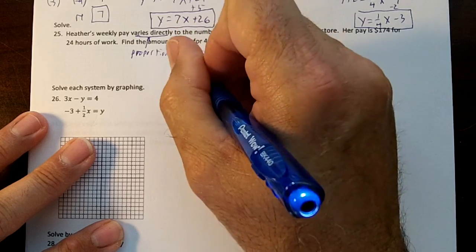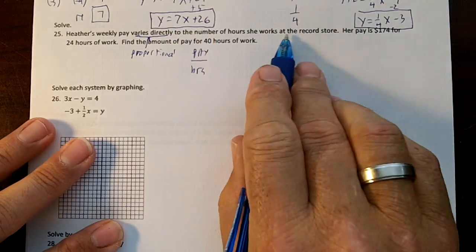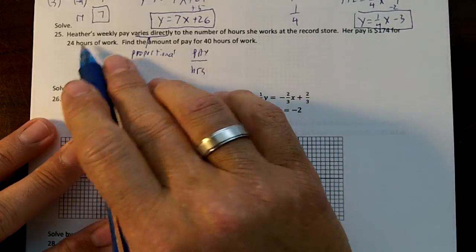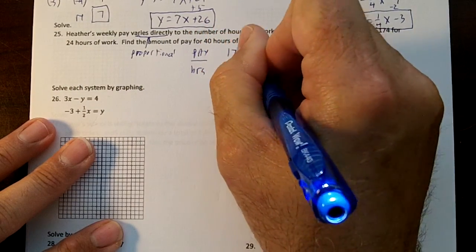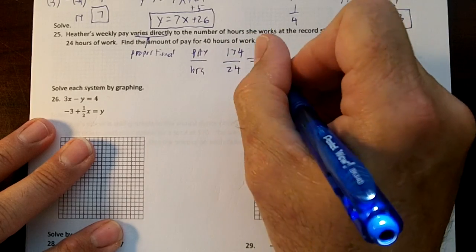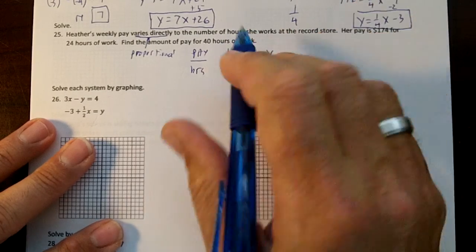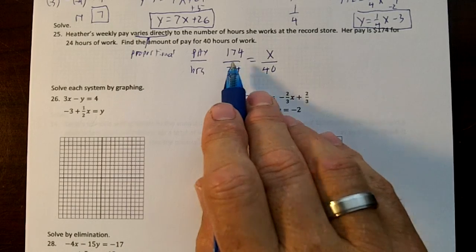Her pay is $174 for 24 hours, so 174 over 24 equals 40 hours. You put the 40 on the bottom and we want to know how much money she'll make.